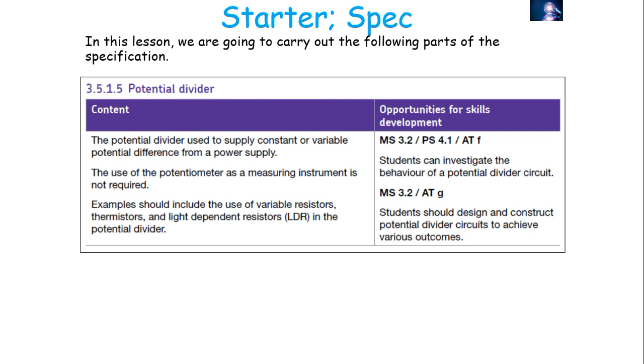This links into the AQA A-level specification as follows. In previous lessons we've looked at the definition of a potential divider and the basic way to calculate values using potential divider circuits. The specification states you need to be aware of various examples such as the use of variable resistors, thermistors and LDRs in a potential divider circuit, which is what we're going to look at in today's lesson.